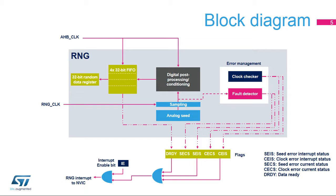The digital post-processing block is able to produce four 32-bit random numbers per round of computation. The sampling of analog seeds is clocked by a dedicated RNG clock signal so that the quality of the random number is independent of the HCLK frequency.